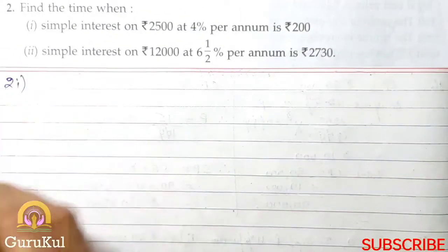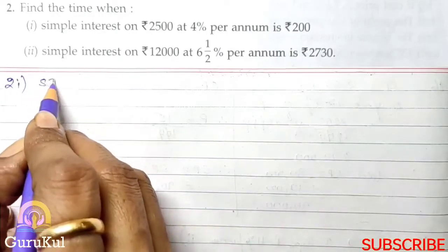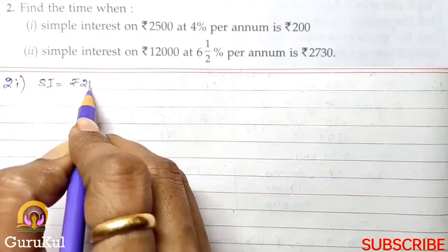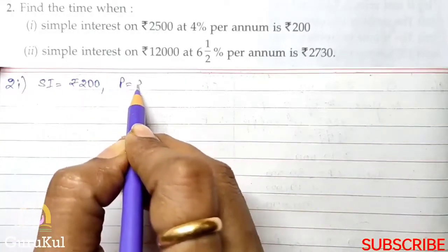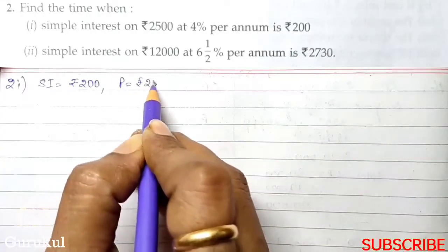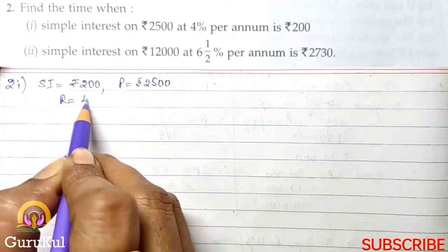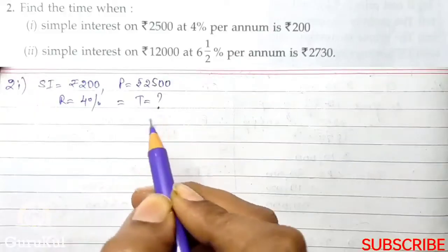Question no. 2, 1st part. Now we have to find the time when interest mentioned is Rs. 200. Principal is Rs. 2500 and rate is 4% and we need to find the time.